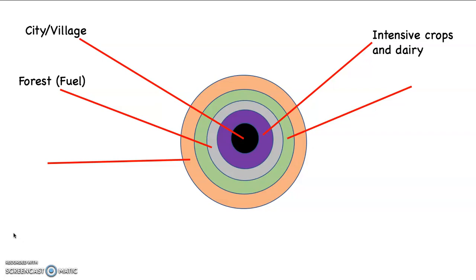Then surrounding that, on my model, the gray, is the forest. Now that may seem kind of weird. But remember, at that time, wood would have been the primary fuel. That would have been how they warmed themselves. This would have been how they cooked. And wood, of course, is heavy to transport.